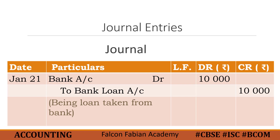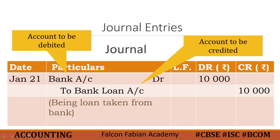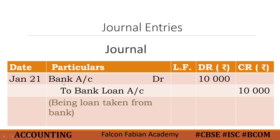So this is our journal entry. In a journal entry, you have first the debit entry, then the account that needs to be credited, and then the narrative — that is the structure. The two accounts are bank and bank loan. Bank account had to be debited, so it is written in the first line. You write the name of the account to be debited, followed by A/C, then DR.